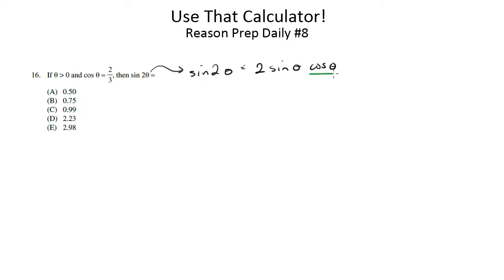So we already have cosine of theta. That's just two-thirds. But we don't have sine of theta yet. So we need to find the sine of theta.